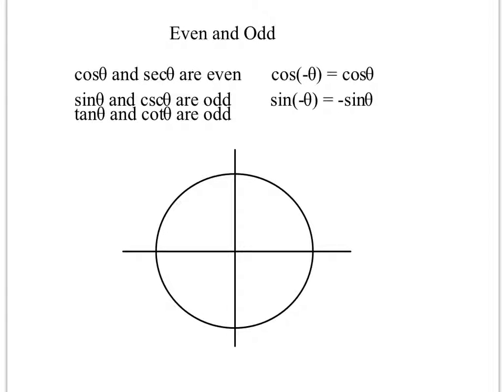So all these trig functions that you've been learning about have even and odd properties. If you look, cosine and secant are the only even ones. You just have to remember cosine is even, and then its reciprocal is going to be even.